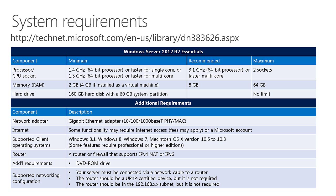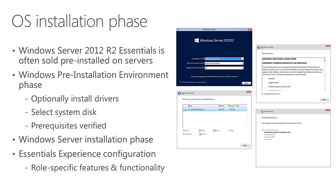Looking at the installation process, we'll begin with some basic system requirements — this is just a reference slide. I have a link at the top that points to the TechNet page where you can find the most up-to-date information. Things get started with the installation phase, if you aren't purchasing an OEM server that has Essentials pre-installed. If you're using volume licensing media or retail media, things start off with the OS installation phase, the basic environment of laying down the bits.